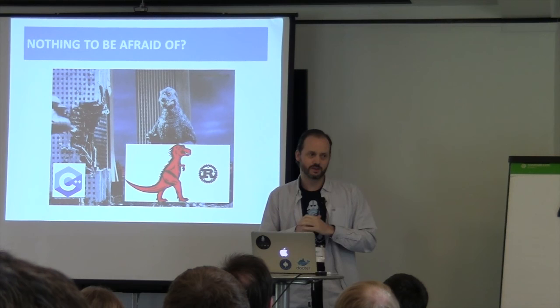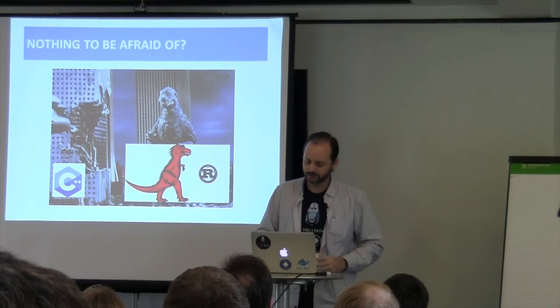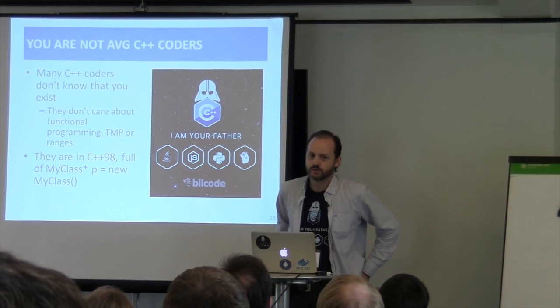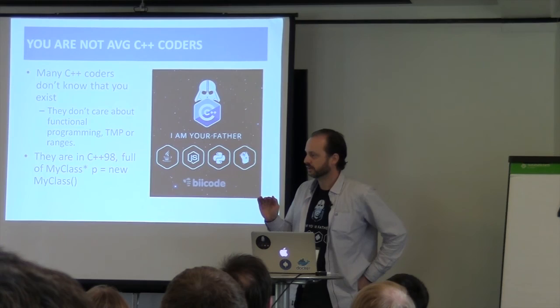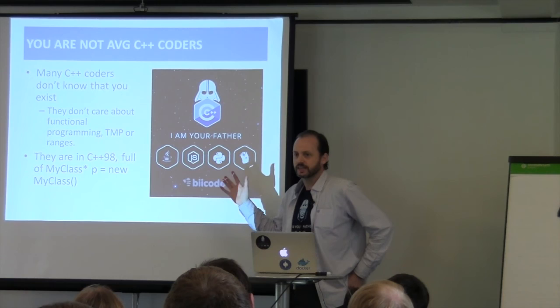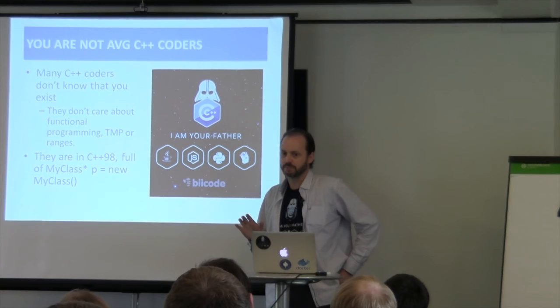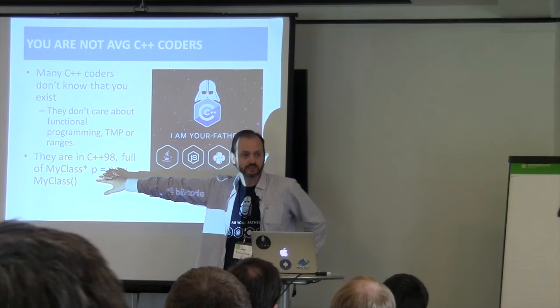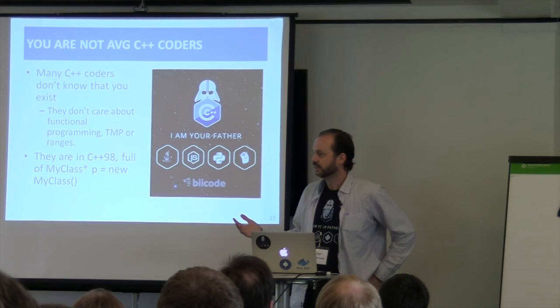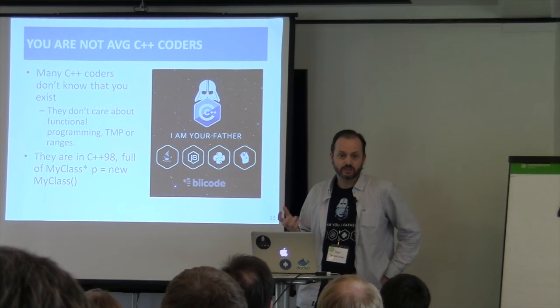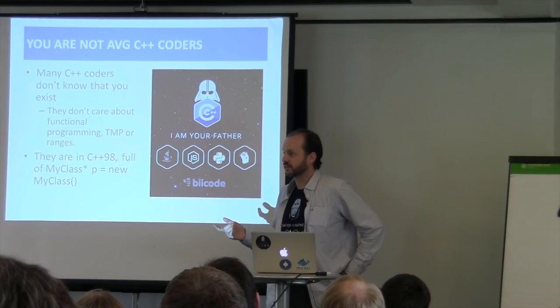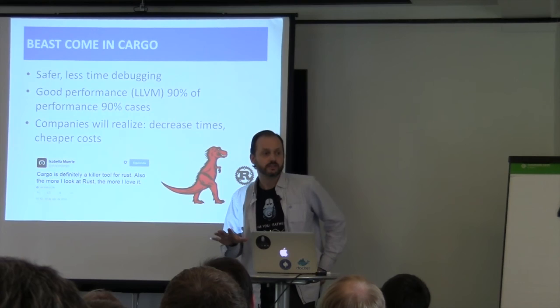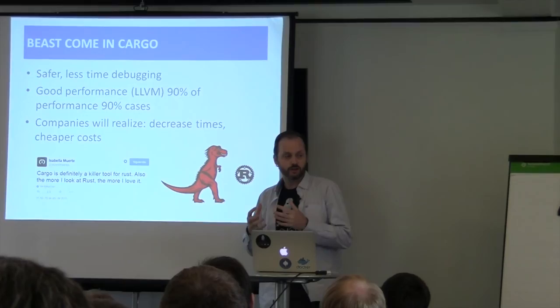Why do I think that? You here are not average C++ coders — you are one in 1,000 or 10,000 developers. You are the top. But most C++ coders out there don't care much about functional programming. They don't know a word about template metaprogramming; they can barely do templates. They are actually writing what my colleague Manu Sanchez calls Java++. Those companies are releasing products, selling them — maybe the quality is crappy, but they are doing business, with hundreds and thousands of developers writing this code. Something like Rust, which is much safer for the average coder, has a lot of potential.